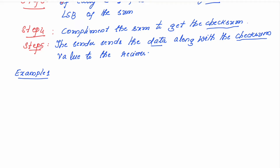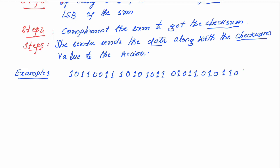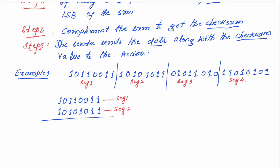With an example, let me explain this. We had 4 segments. In example 1, I have taken 32 bits as the data. This data, as I already told, is getting divided into 4 segments. So we have here 4 segments. Now the sender is trying to add these segments. I have named all these segments: segment 1, segment 2, segment 3, segment 4. First, in order to add all the 4 segments, I will add segment 1 and segment 2. Then whatever value I get, I will add it to segment 3. Then finally, whatever value I get after adding segment 3, I will add it to segment 4. So segment-wise addition is carried out here.